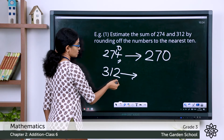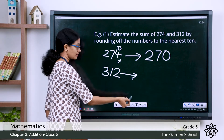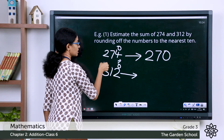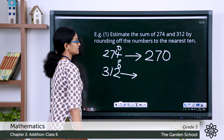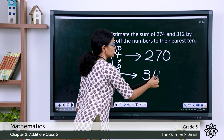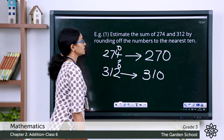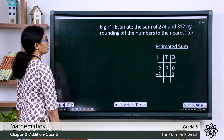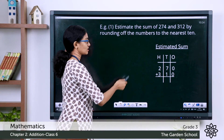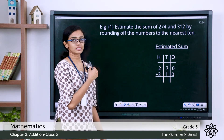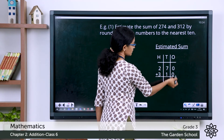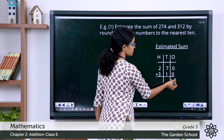Now 312 rounded off to the nearest ten — here also the digit to the right of the rounded digit is less than five, so let's keep the rounded digit as it is and change the ones digit to zero. That gives you 310. Now let's add the rounded addends to get the estimated sum.